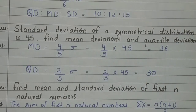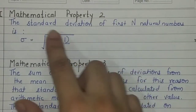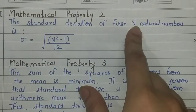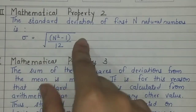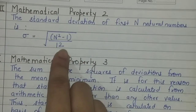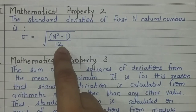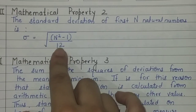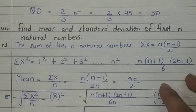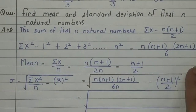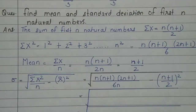Now let's derive Property 2 — the standard deviation of the first n natural numbers equals √((n²−1)/12). Such derivation questions have been asked in university exams. The question asks: find the mean and standard deviation of the first n natural numbers.